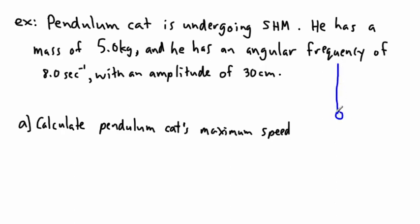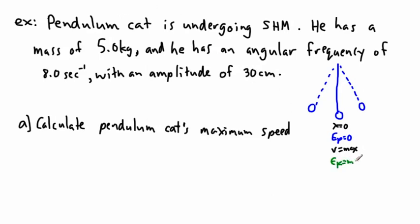So this is a cat undergoing simple harmonic motion — let's assume he's a pendulum going back and forth. At the equilibrium point, x equals zero. When x equals zero, your potential energy — which is kx squared — is zero, and that means your velocity is at a maximum, so your kinetic energy is also at a maximum. At maximum displacement, your potential energy is at a maximum, your velocity will be zero, and therefore your kinetic energy will be zero.